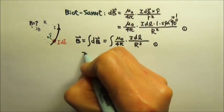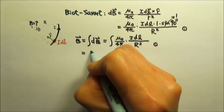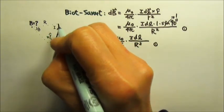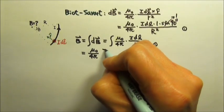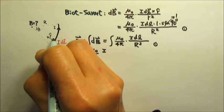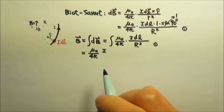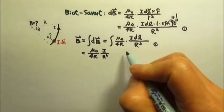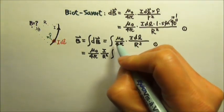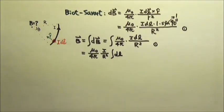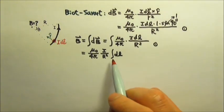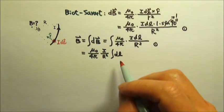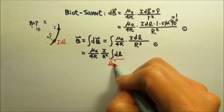For this integral, we can take out anything that is a constant. So we can take out the mu naught over 4π. The current is also the same for every segment, so I can be taken out. And every segment is the same distance to this point we're interested in, so it's I divided by R squared. And then what's left in the integral is just the integral of dL. If we add the scalar dL together for this entire arc, what we get is the length of the arc.